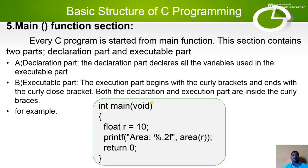For example: int main() { float r = 7; — this part is known as the declaration part. And after that printf(...) — these are the executable parts of the C program.